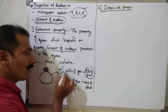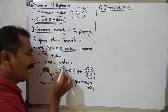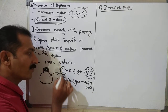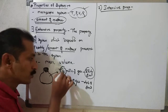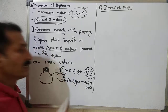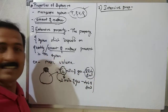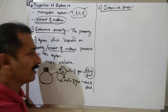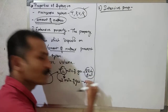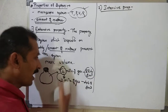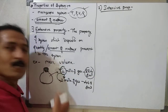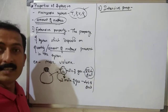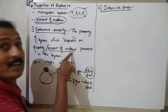When I increased the amount of matter from one mole to two moles, the volume also increased. So volume depends on the amount of matter — as the amount of matter increases, the volume increases.